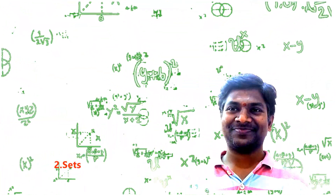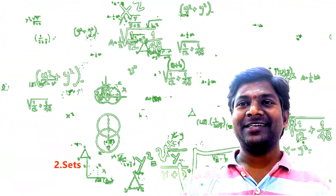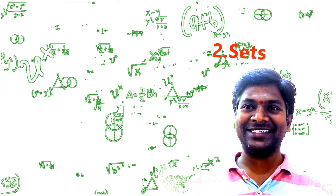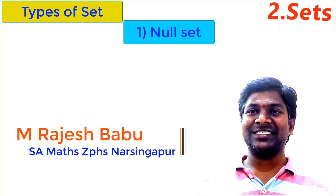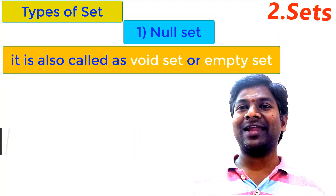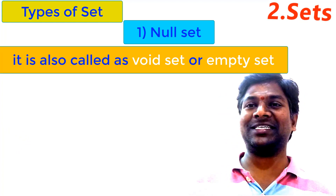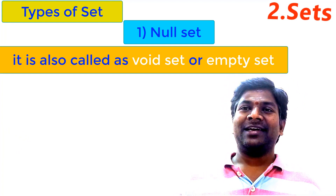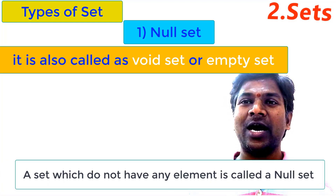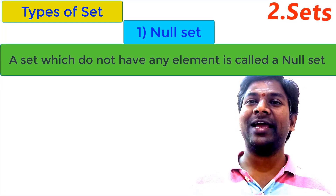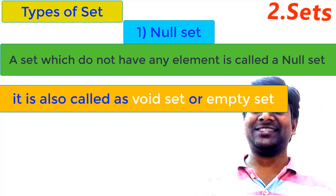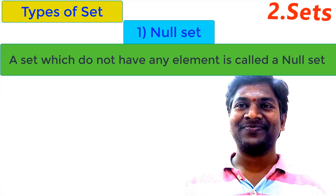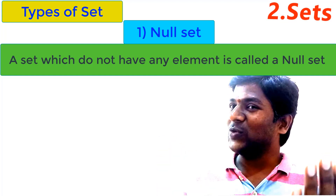Hi viewers and students, now we see some new concepts in the chapter sets. The first one is null set. Another name of null set is void set, and also it is called empty set. The set which does not have elements is called null set. Null set has no elements.